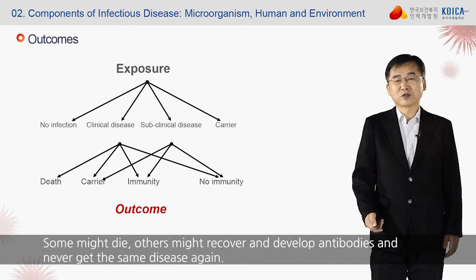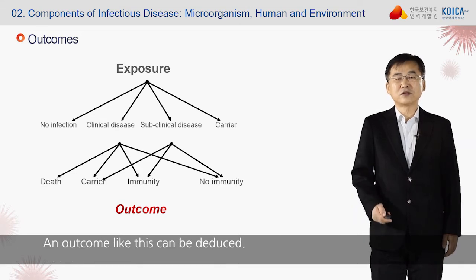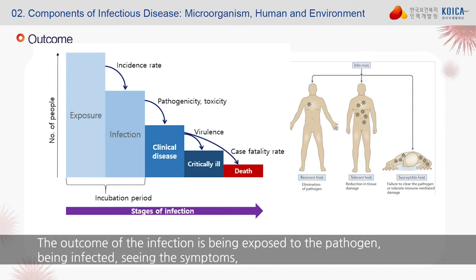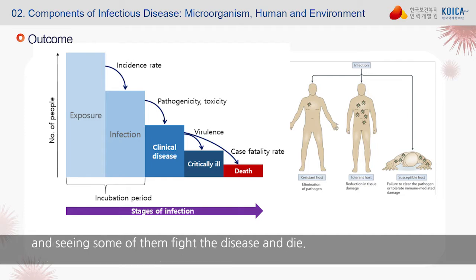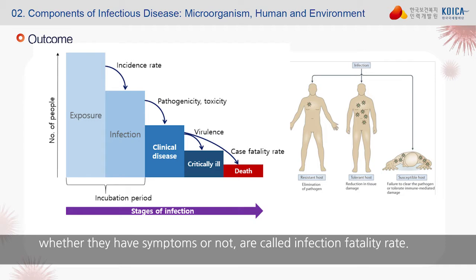Some might die; others might recover and develop antibodies, never getting the same disease again. The outcome of infection ranges from being exposed, to being infected, seeing symptoms, and some fighting the disease and dying. Those who died from the disease are measured by the case fatality rate, and those who died from the entire number — whether they have symptoms or not — are called the infection fatality rate.